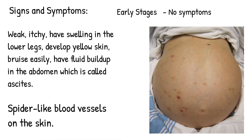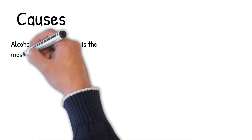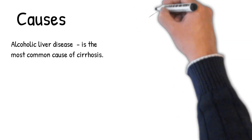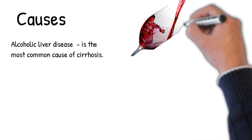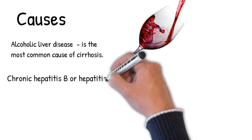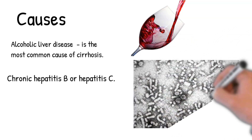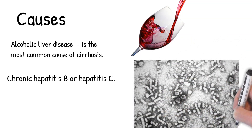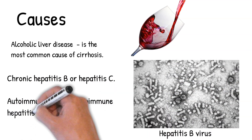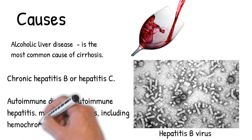Causes of cirrhosis include: alcoholic liver disease, which is the most common cause of cirrhosis; post-necrotic cirrhosis caused by chronic hepatitis B or hepatitis C; autoimmune disease such as autoimmune hepatitis; and metabolic diseases including hemochromatosis, Wilson's disease, and others.